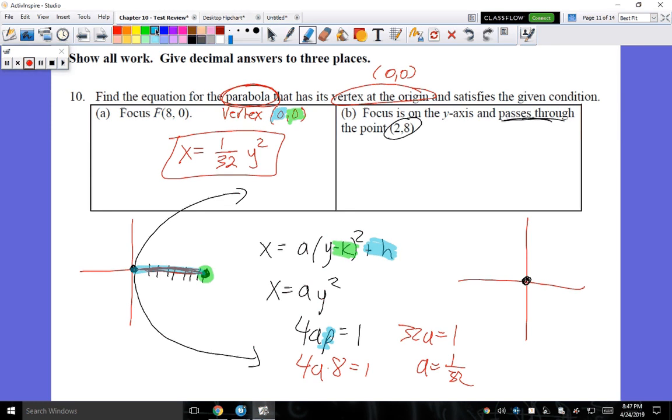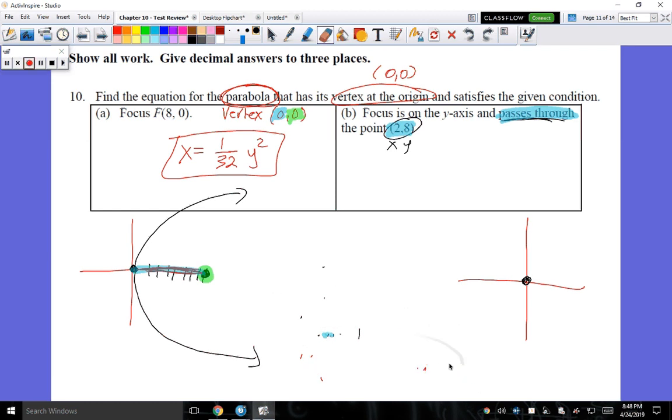But it says this time that it passes through a point (2,8). Now this passing through a point, it's rare that we use this. But this is the X and Y actual values that we're going to plug into this equation. And the focus, there's another bit of information that I've overlooked, is on the Y axis. So if it's on the Y axis, the focus can either be up here where the parabola is looking up, or it can be down here where the parabola is looking down.